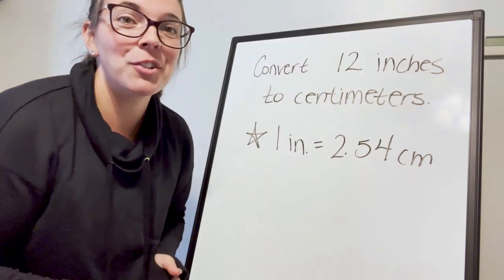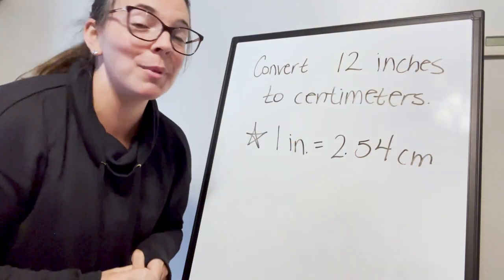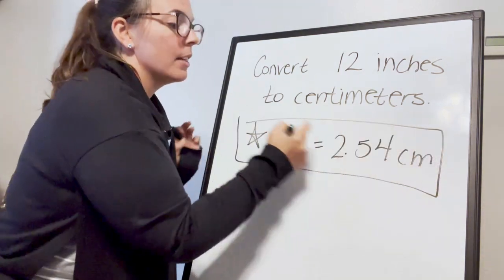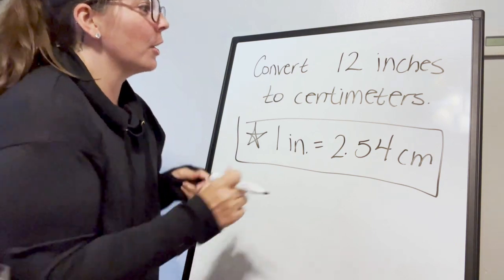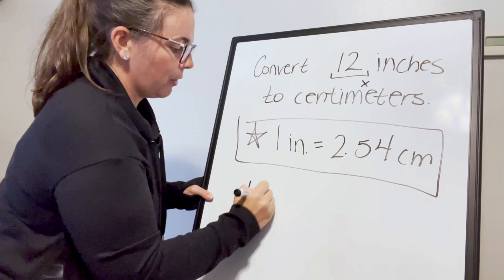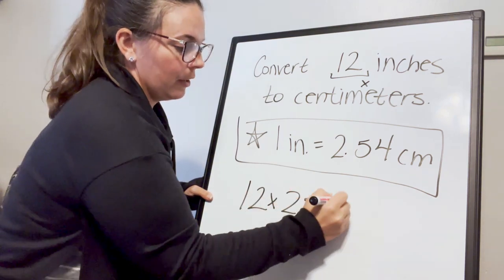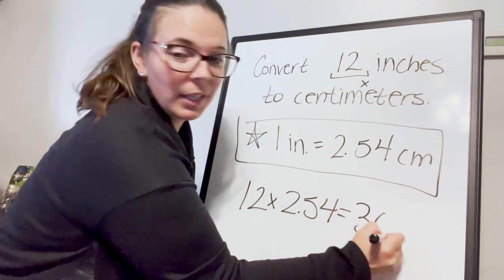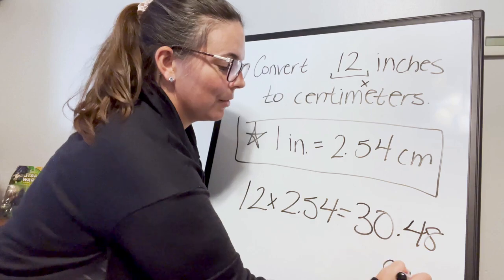Let's convert 12 inches to centimeters. The key fact is that one inch equals 2.54 centimeters. All I need to do is multiply my inches by that factor: 12 times 2.54 equals 30.48 centimeters.